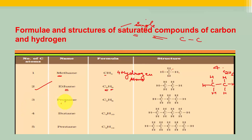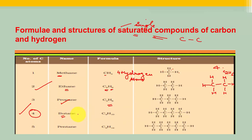Then we have propane, which is C3H8. Three carbon atoms are joined together with a single bond — since we are studying saturated compounds — and satisfying the valencies gives us eight hydrogen atoms. Butane has four carbon atoms and ten hydrogen atoms. We will study butane more — there is a straight chain structure, and we will see that butane can also form other structures. That is why naming is done for such compounds, because there can be different structures with the same formula, and naming helps you differentiate one structure from another.